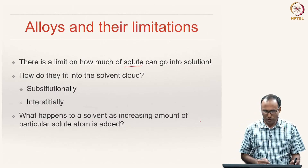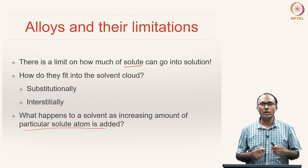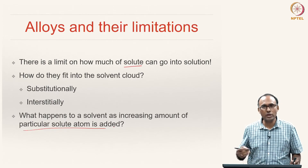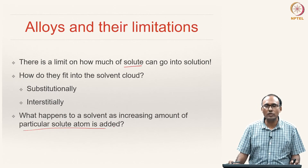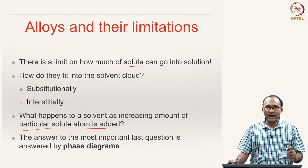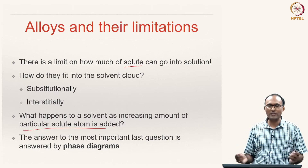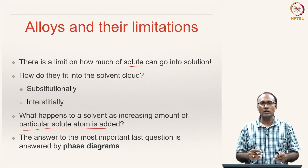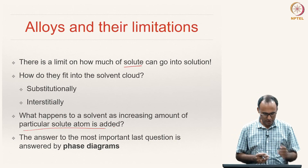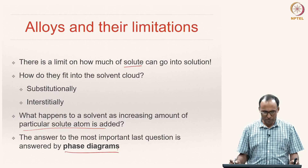What happens to a solvent as an increasing amount of a particular solute atom is added? You cannot keep on adding the solute atom — as discussed, there is a limit. If you keep on adding, what happens to your base metal as an alloy is something one needs to understand. This important question — what happens when you add solute atoms to a solvent and what happens to the base metal — is answered by phase diagrams. That is why we are spending a significant amount of time understanding phase diagrams.